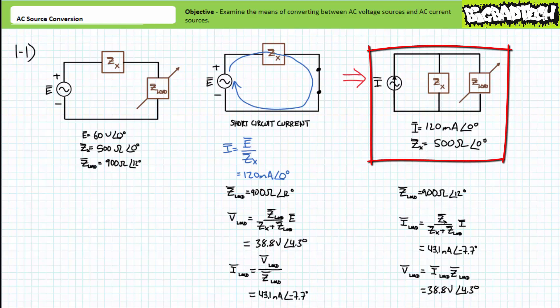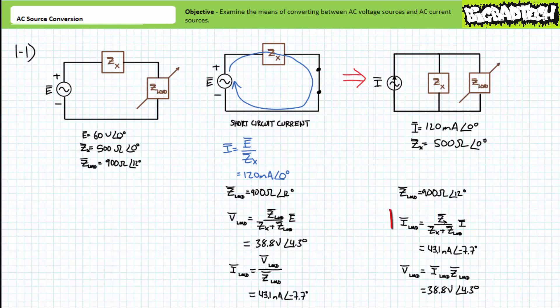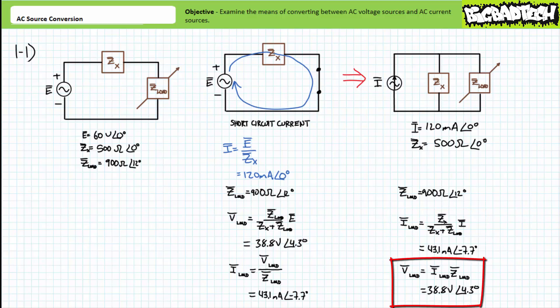Our modified configuration is a perfect setup for the AC current divider rule. We know incoming current and we know both impedances in a parallel combination of two elements. An application of the AC current divider rule demonstrates current through the variable load impedance currently set at 900 ohms at an angle of 12 degrees will be 43.1 milliamperes at an angle of negative 7.7 degrees. A subsequent application of Ohm's Law demonstrates voltage across the variable load impedance will be 38.8 volts at an angle of 4.3 degrees. Equivalency has indeed been maintained and the variable load impedance is none the wiser to the substitution.